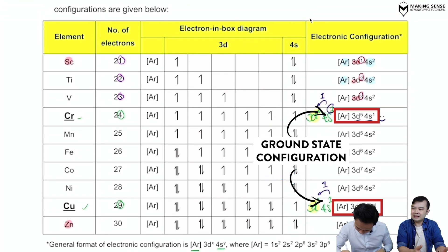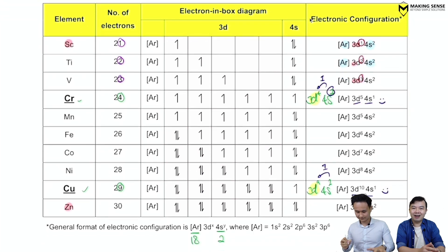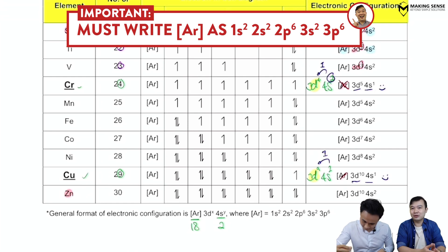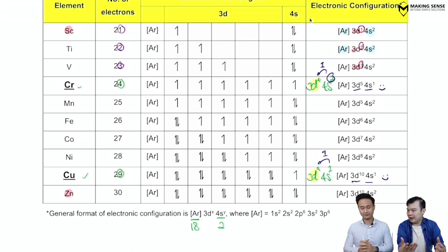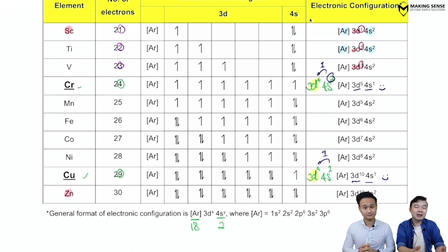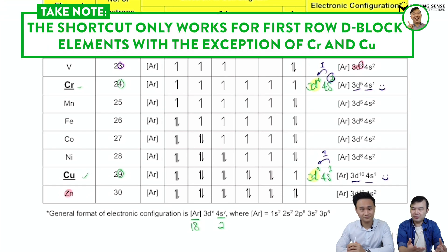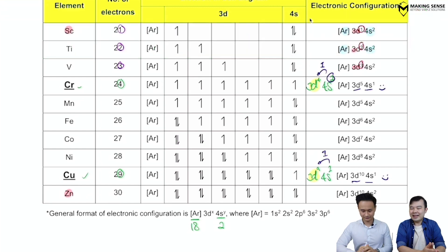Bear in mind that for these configurations in exams, the square bracket [Ar] notation is not accepted. Regardless of what they ask, you must write out starting from 1s2, 2s2, and so forth. Also, the second-digit shortcut only works for first row d-block elements from scandium to zinc, with the exception of chromium and copper.